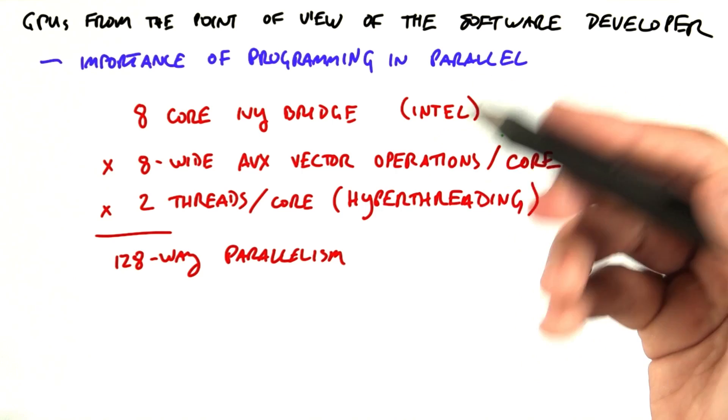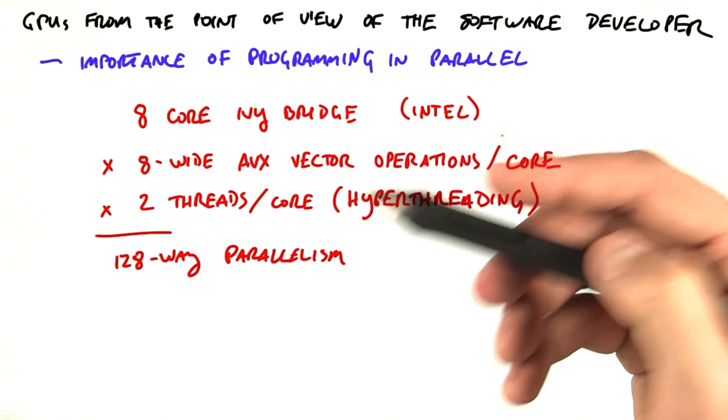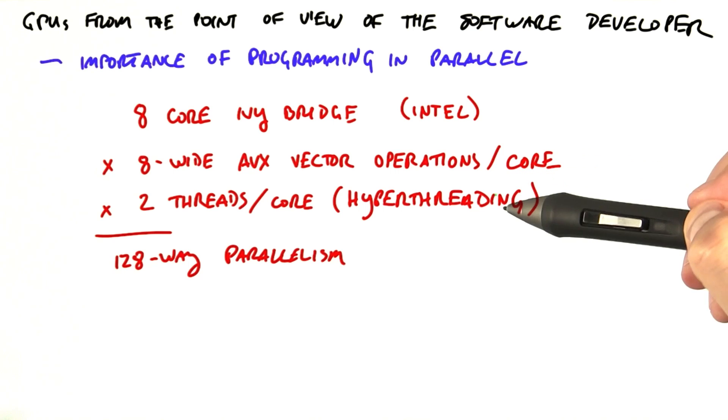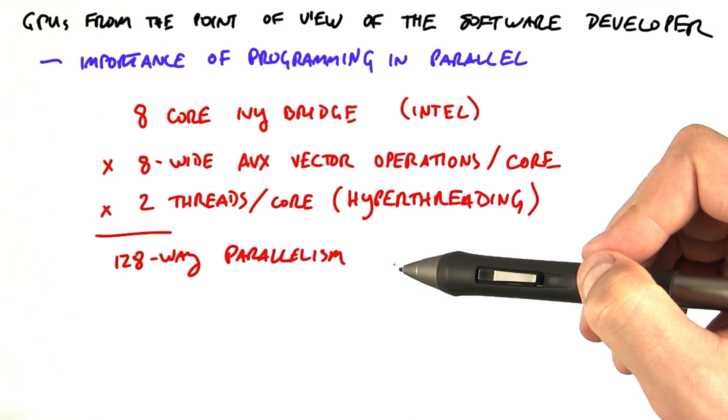If you buy an 8-core Intel Ivy Ridge processor, we see that it has 8 cores. Each core has 8 wide AVX vector operations. Each core supports two simultaneously running threads. Multiply those together and you get 128-way parallelism.